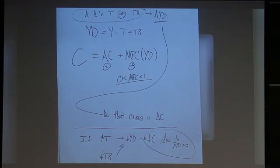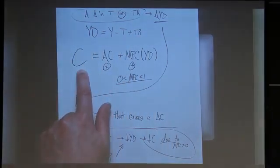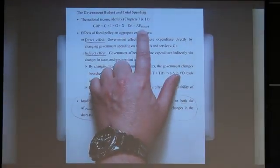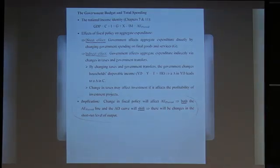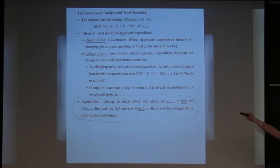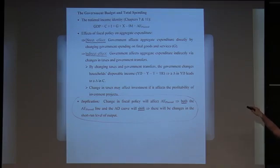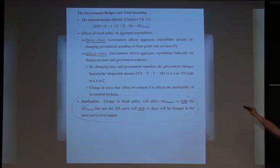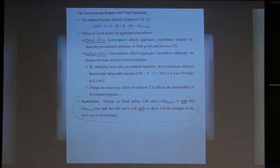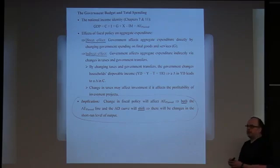By changing taxes or transfers, the government changes disposable income; a change in disposable income results in a change in C, which changes planned expenditure. Also, a change in taxes may influence investment spending if it impacts the profitability of investment projects. If investment projects become more profitable, investment will rise; if less profitable, investment will fall.